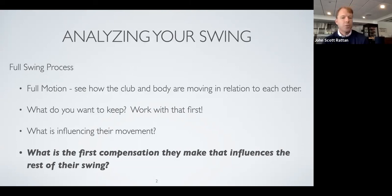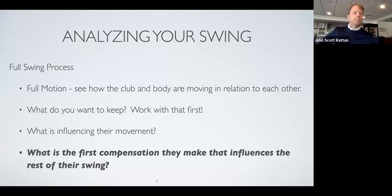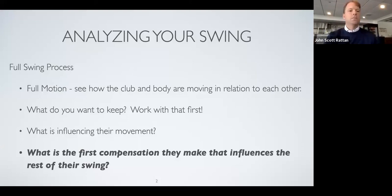The other thing I'm thinking about is: what's the first compensation the student makes that influences the shot or the problem I'm trying to fix? During a swing, when you see a problem you're usually seeing the effects of a much earlier cause. You'll see that a lot today — we're going to be looking at results and then working on what's causing them way earlier in the swing, before the negative feedback result appears.